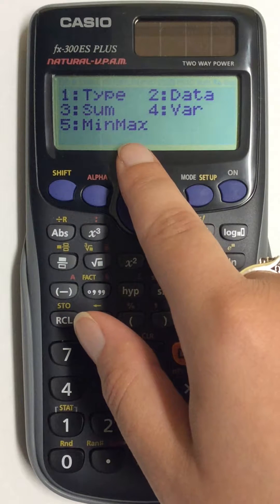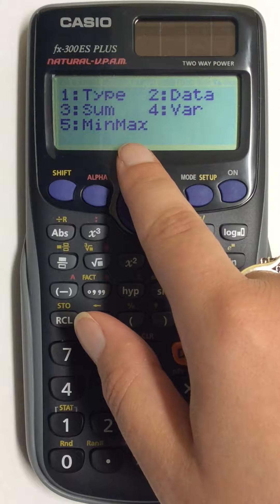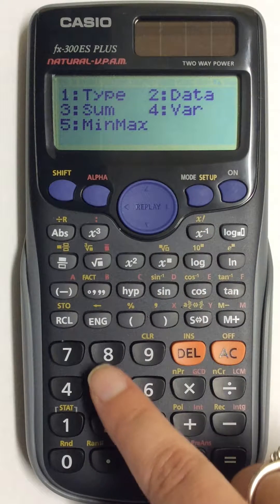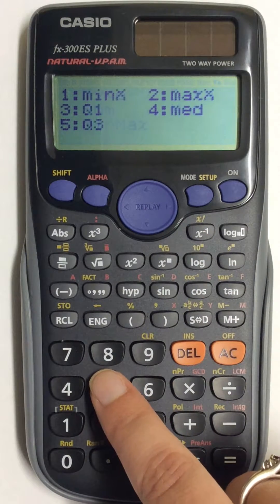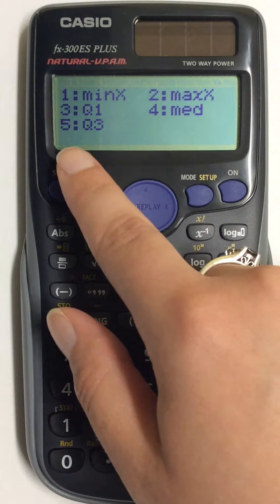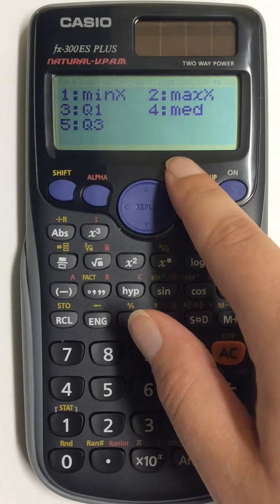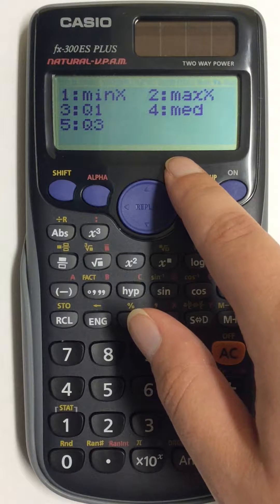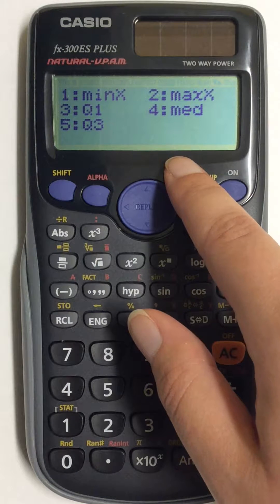Those are going to be all of the values for your five-number summary. So I'm going to press 5, and then all of these options come up on the screen. All of these numbers you will need for your five-number summary.